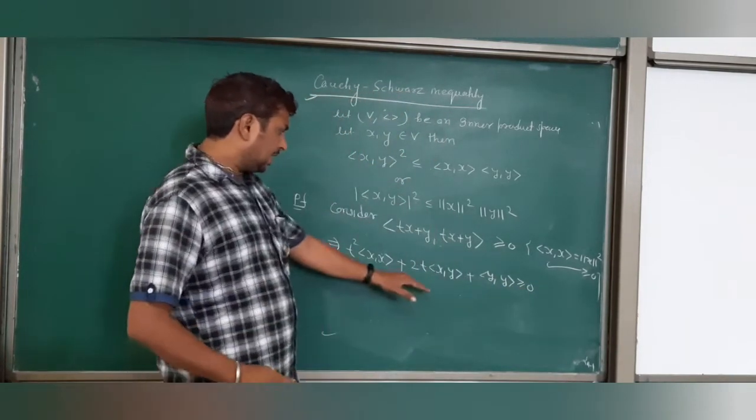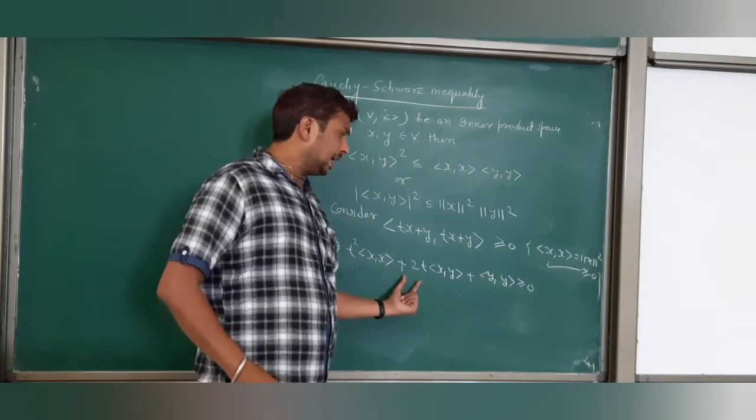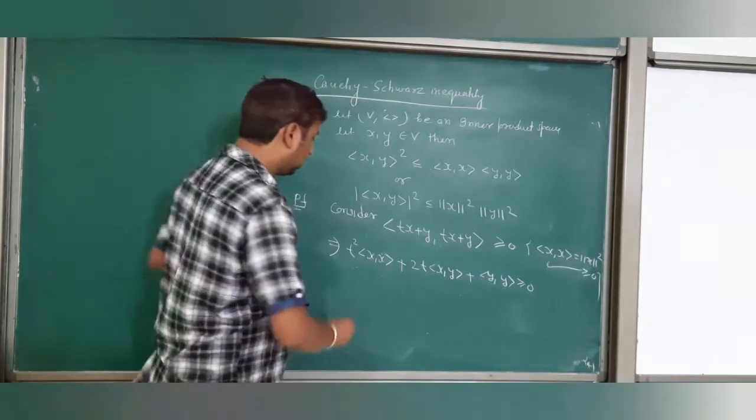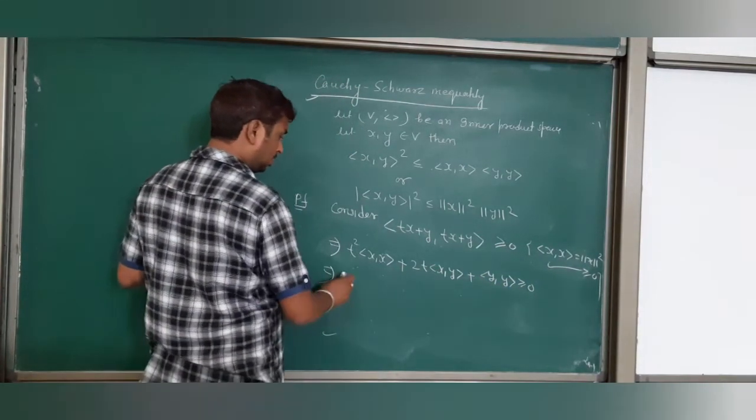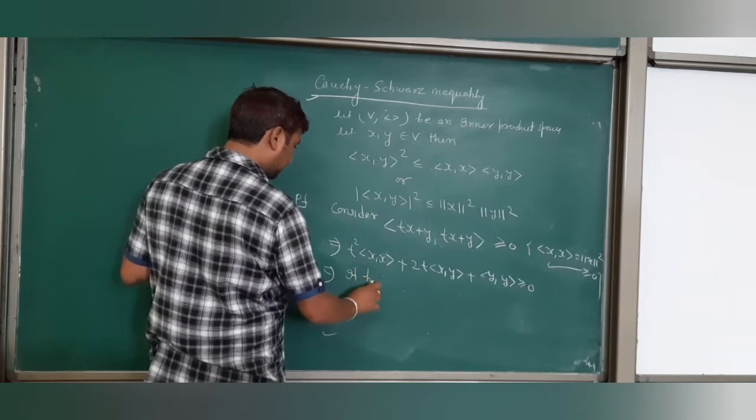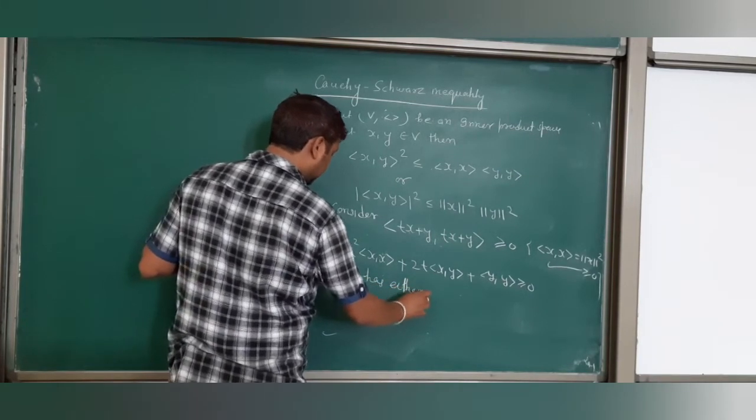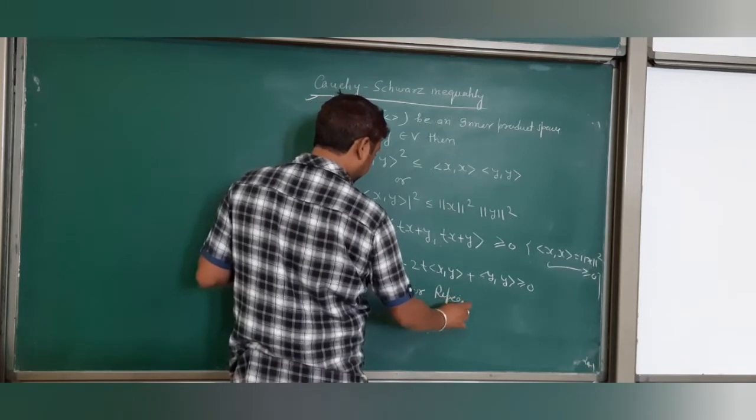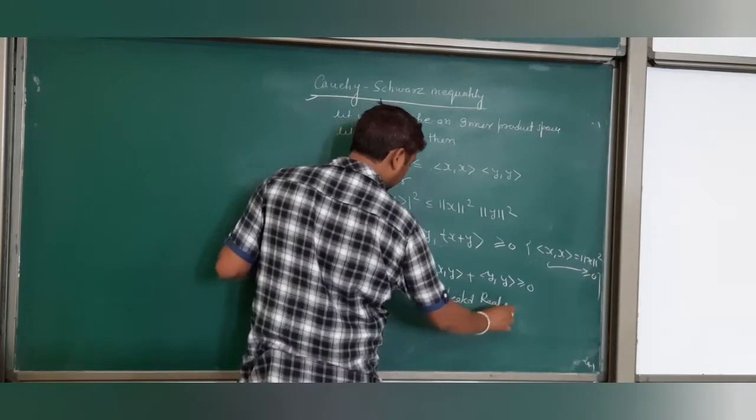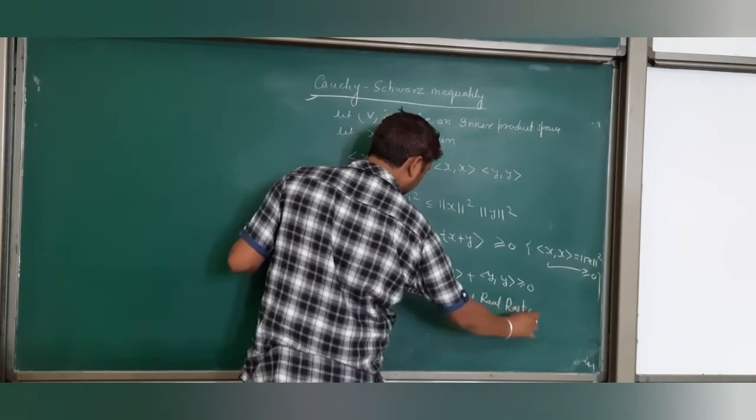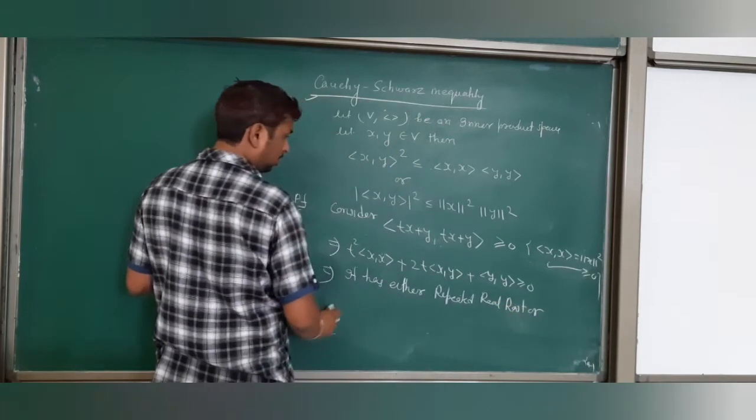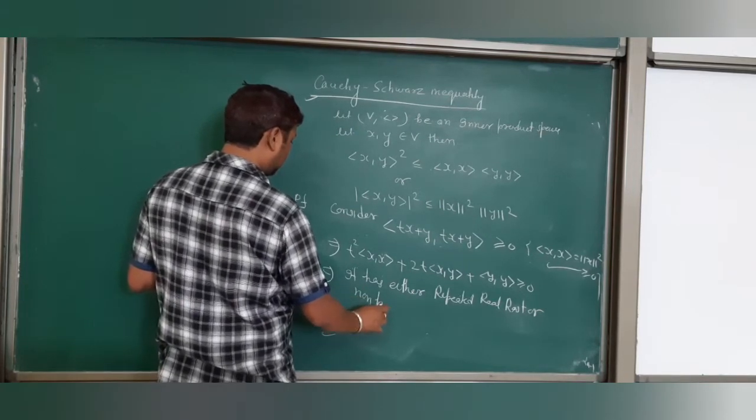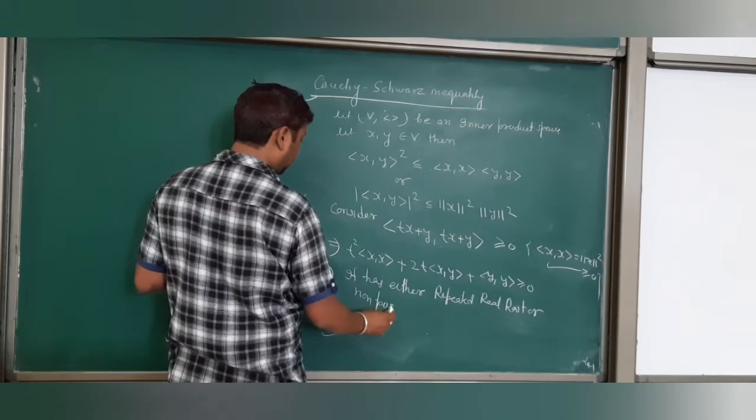Now see, the right hand side part. T is a scalar. It is a second degree equation in t which is positive. It means it has either repeated real roots or non-real imaginary roots.